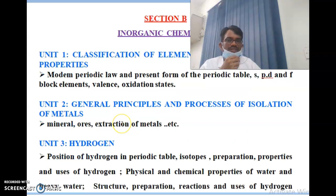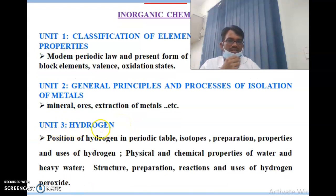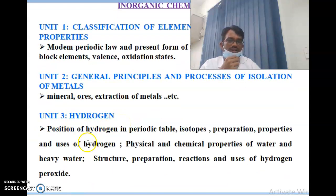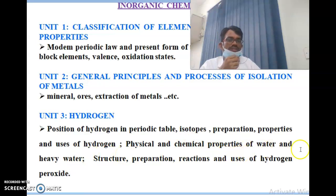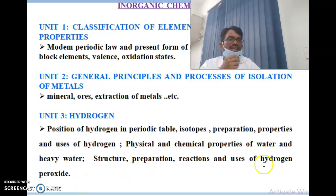Unit 3 is hydrogen. It covers the position of hydrogen in the periodic table, isotopes of hydrogen, preparation, properties and uses of hydrogen, physical and chemical properties of water and heavy water, and the structure, preparation, reactions, and uses of hydrogen peroxide.